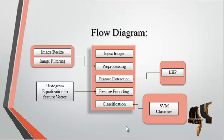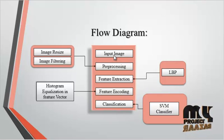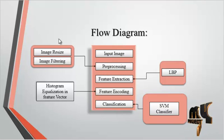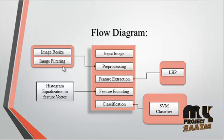Now we discuss the flow diagram for the process. This is the overall flow structure: first, the input image is taken from the dataset folder, which consists of several input images. After getting the input image, preprocessing is carried out. The preprocessing steps include two modules: the input image module and the image filtering module. The image is then resized.